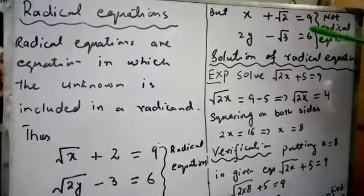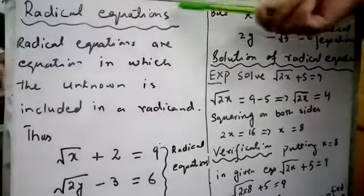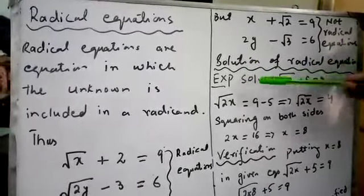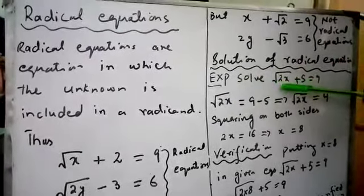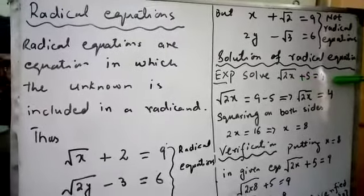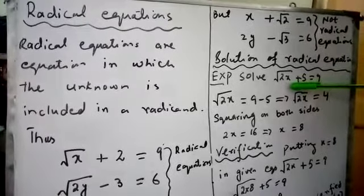Now, we will check how to solve any radical equation, that is solution of radical equations. Start from an example. Solve square root 2x plus 5 equals 9. This is a radical equation. We will solve this equation. How?